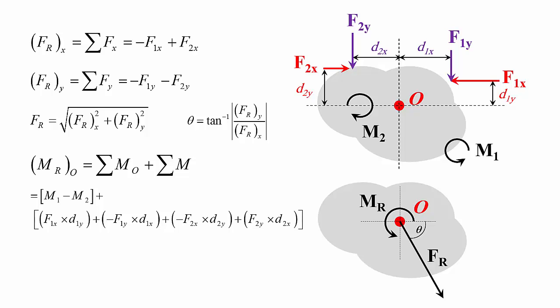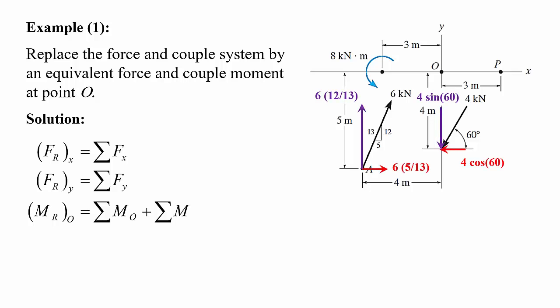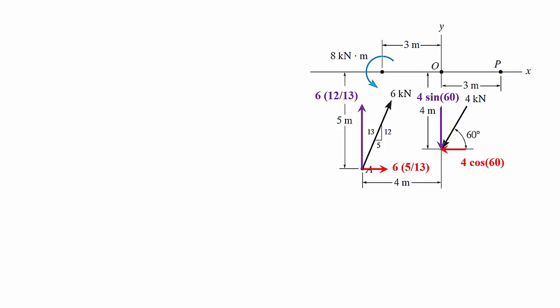We will be doing two examples. So let's start with the first example. Example one, replace the force and couple system by an equivalent force and couple moment about point O. We want to simplify this system into a single force and a single moment. So the solution is applying these three equations. For me to apply these equations, especially the first two, I need to know the components. Because remember, everything has to be on the X and the Y. Because I'm trying to get the summation of the force in the X direction and summation of the forces in the Y direction. So if I resolve them as shown, I will have the following.